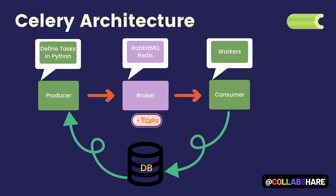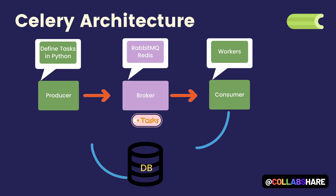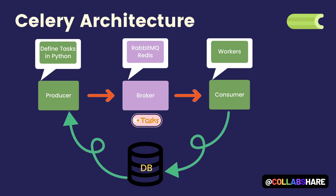Now let's take a look at Celery's architecture. Celery is a distributed task queue system that allows you to execute tasks asynchronously across multiple worker nodes. The architecture is based on a combination of message passing and a client-server model. When you create a task in Celery, it gets added to a task queue, which is usually implemented using a message broker such as RabbitMQ, Redis, or Amazon SQS. The message broker acts as a middleman between the client and the workers.